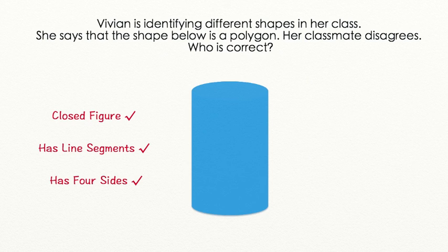Let's go through a word problem together. Vivian is identifying different shapes in her class. She says that the shape below is a polygon. Her classmate disagrees. Who is correct? Let's go through this together. It looks like she wrote some notes next to the shape. She says that it is a closed figure, it has line segments, and it has four sides. This sounds like a polygon.